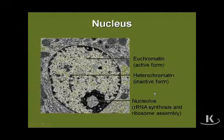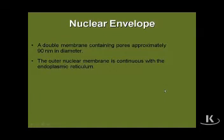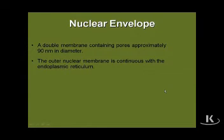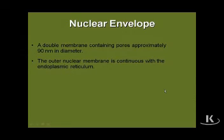This is also a very good electron micrograph of a nucleolus — as we well know, a site of ribosomal RNA synthesis and ribosomal assembly. The nuclear envelope is a structure in the form of a double membrane, and it contains pores that are continuous with the endoplasmic reticulum. There's only one other subcellular organelle that contains a double membrane surrounding it, and that will be a mitochondria.